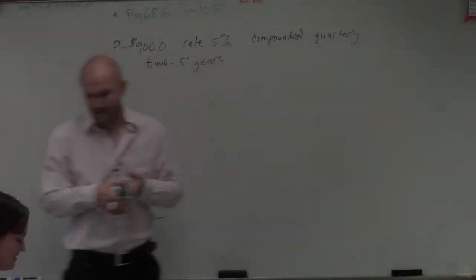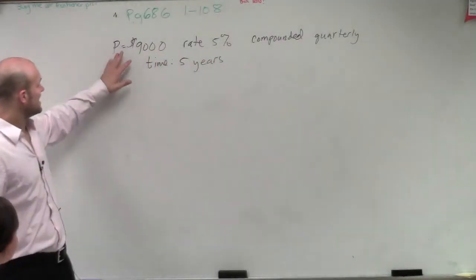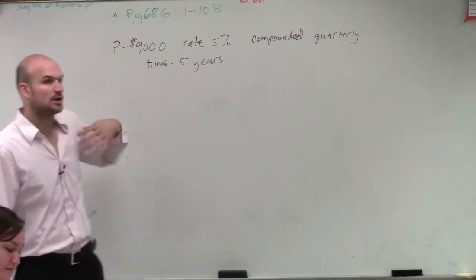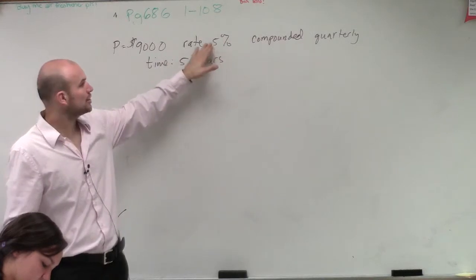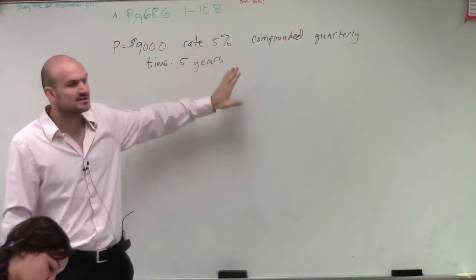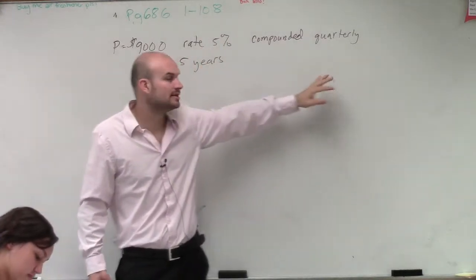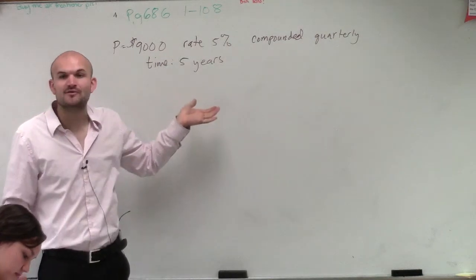So for this problem, what we have is the amount we call our principal is $9,000. The rate is 5%, compounded quarterly, for a time of five years.